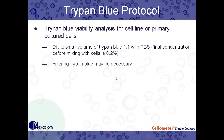The Trypan Blue protocol is very simple. The viability analysis is for cell lines or primary cultured cells. First, we dilute a small volume of Trypan Blue — I usually recommend one ml. You don't have to dilute your entire stock. We take one ml of Trypan Blue and dilute it one-to-one with phosphate buffered saline, so our final concentration before mixing with our cells is 0.2%. Typically the stock solution you purchase is 0.4%. Also, as Trypan Blue gets older, you may need to filter it to remove any crystallized fragments.